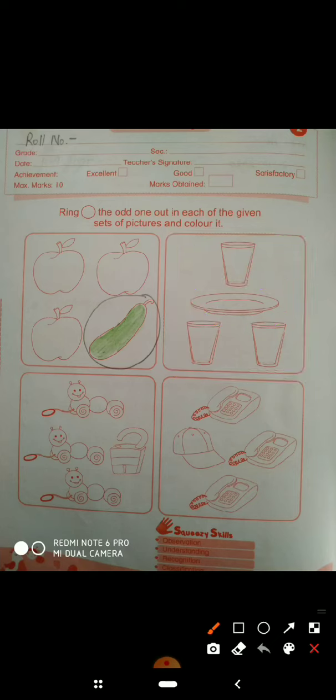Now next, here you can see this toy. There are three toys here. There is a different lock. That means what is inside the toys? So this is odd, so we will circle it and color it. This is the last picture that I will not tell you. You have to do it. Now come on next page.